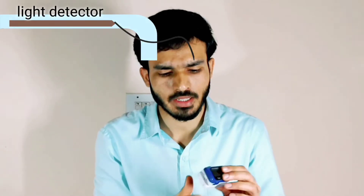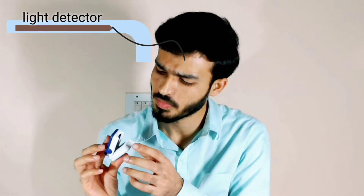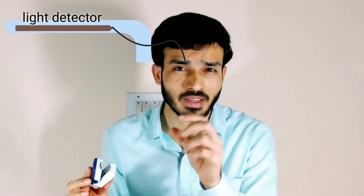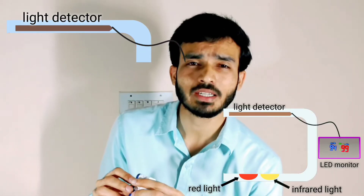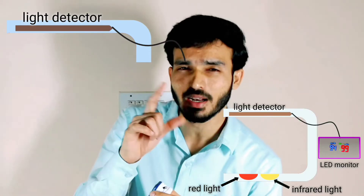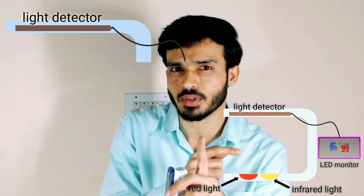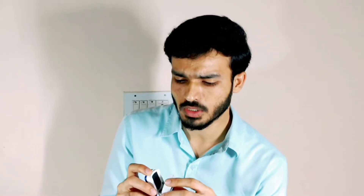A pulse oximeter is a small device which contains a probe. A probe means a sensor that detects the light that passes through your finger, as you can see here.